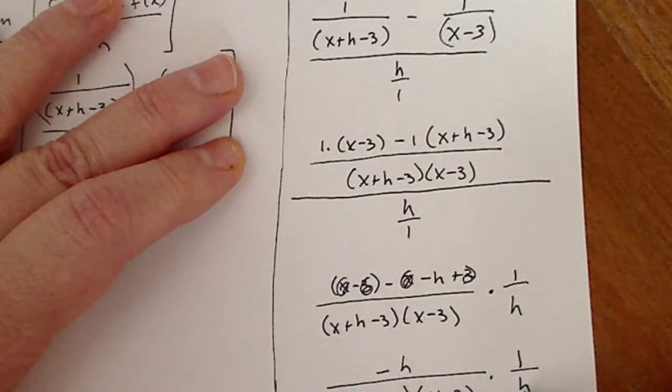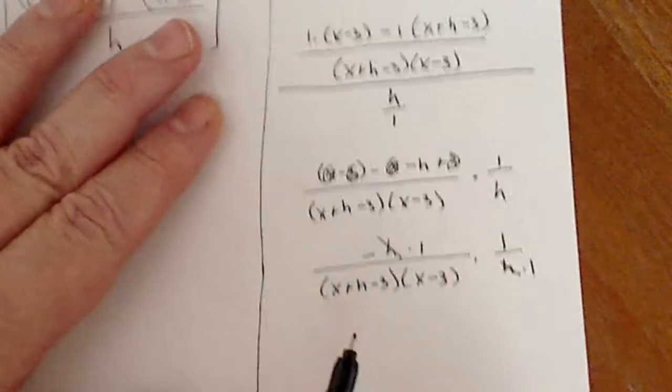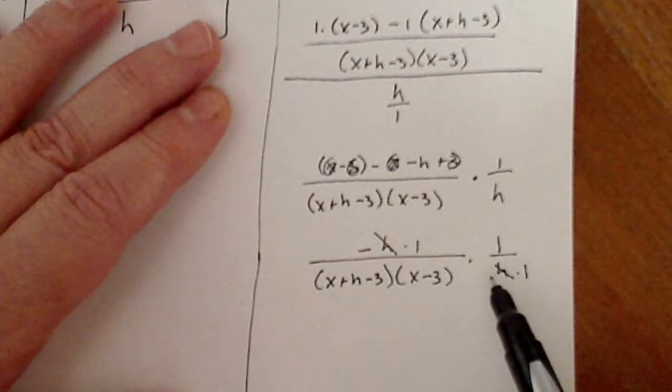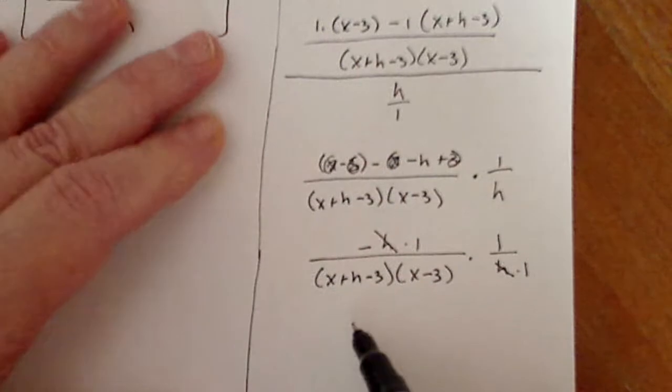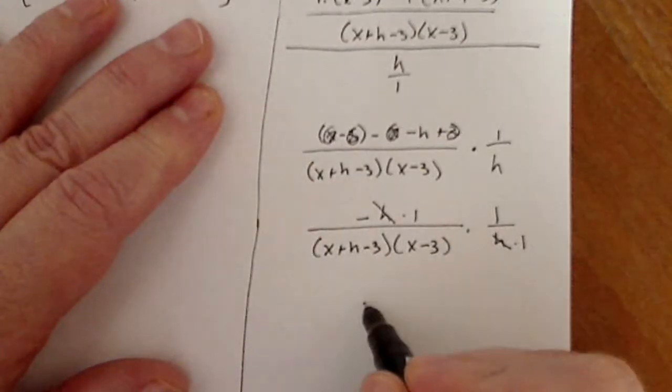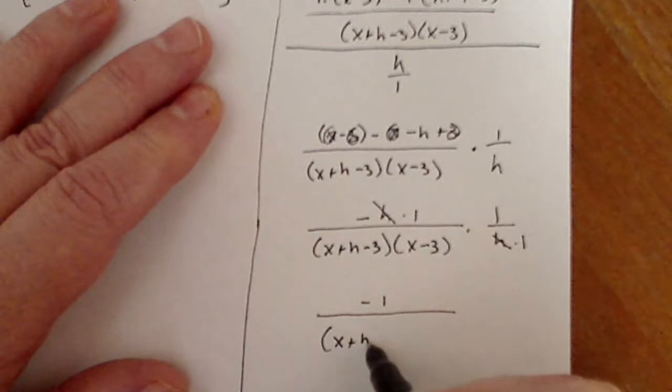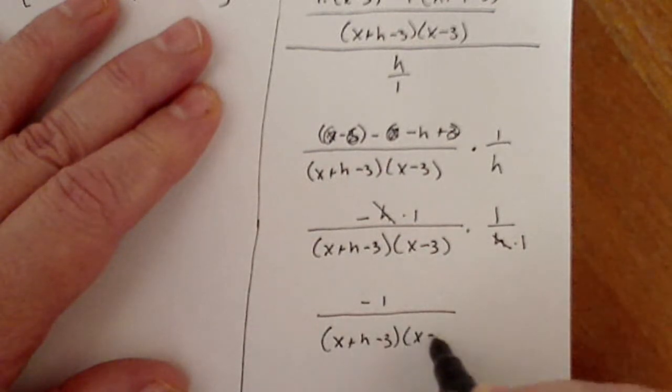In the denominator I have x plus h minus three times x minus three times one over h. Now I can see that I have an h factored out in the bottom. I have an h by itself in the top. I can cancel that h with that h that leaves a one here and a one here. Oh, sorry, that leaves a one up here and a one up here because those h's cancel.